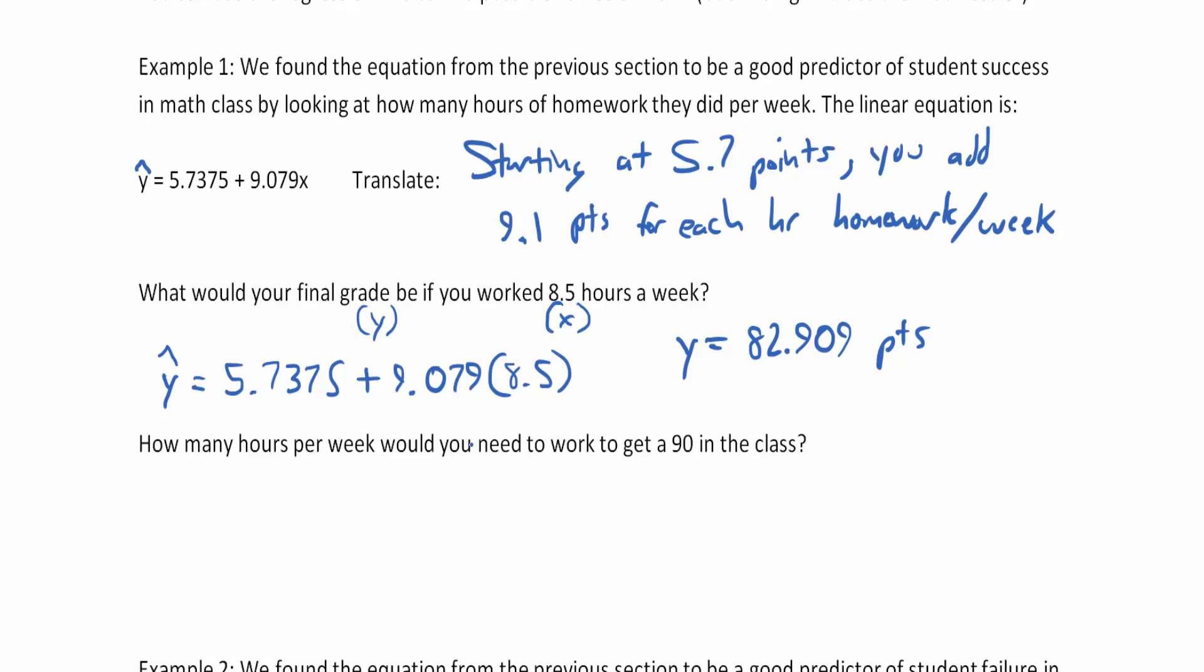Now, how many hours per week would you need to get a 90 in the class? In this case, we don't know the hours per week, so we're trying to find x, but we do know y. The equation starts as 90 equals 5.7375 plus 9.079x. We need to get x by itself, so we're going back to algebra. We subtract 5.7375 from both sides, giving 84.265.